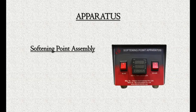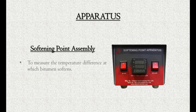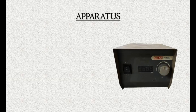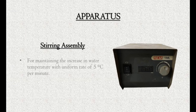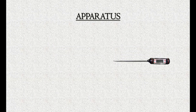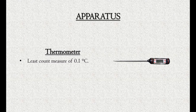Softening point assembly is used to measure the temperature difference at which bitumen softens. Stirring assembly is used for maintaining the increase in water temperature at a uniform rate of 5 degrees Celsius per minute. Thermometer with least count measurement of 0.1 degrees Celsius.